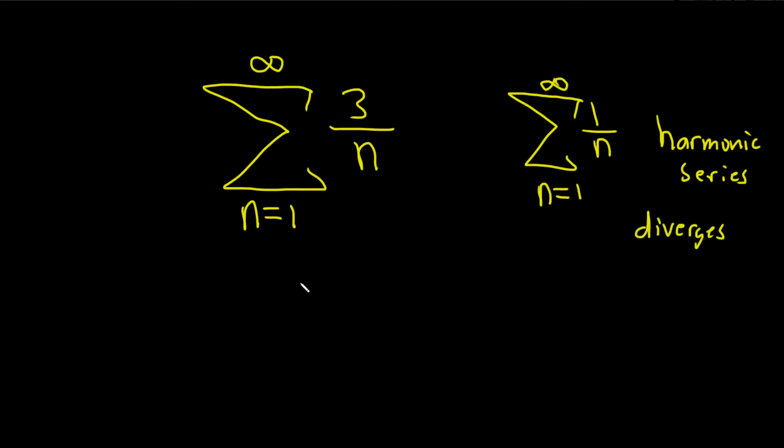If you rewrite this, this is the sum from 1 to infinity of 3 times 1 over n. So basically you have the harmonic series and you're multiplying each term by 3.